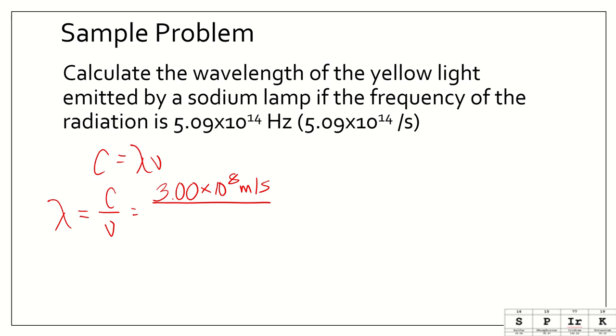C is that constant, which is the speed of light. 3.0 times 10 to the 8th meters per second. Divided by nu, or our frequency, which is given to us in the problem as 5.09 times 10 to the 14th per seconds, or hertz. We just need to calculate that out. Remember we would type 3.00E8, close that parenthesis, divided by, open a new parenthesis, 5.09E14, press enter, and we get an answer or a wavelength of 5.89 times 10 to the negative 7 meters. This is the wavelength, and we will talk later about how to convert these into nanometers.